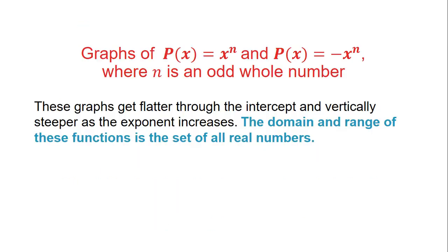In summary, for p of x equals x to the n and p of x equals negative x to the n where n is an odd whole number, the graphs get flatter through the intercept at (0,0) and vertically steeper as the exponent increases. The domain and range of these functions is the set of all real numbers, and the end behavior on each end of the graph does opposite things.